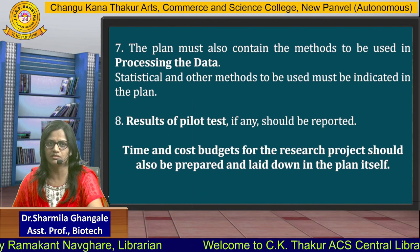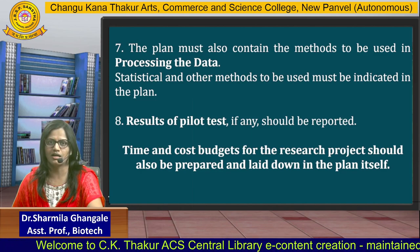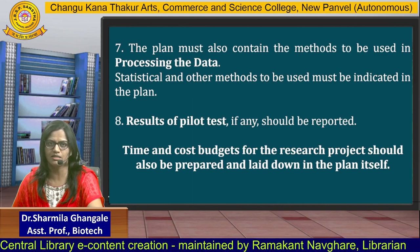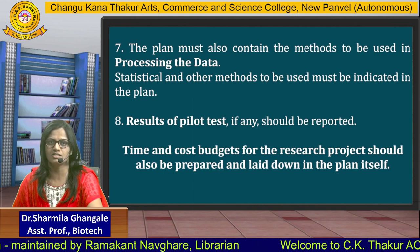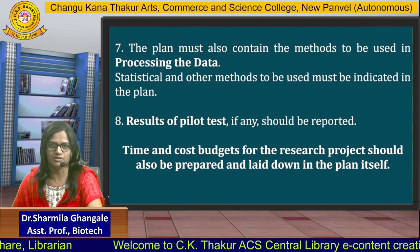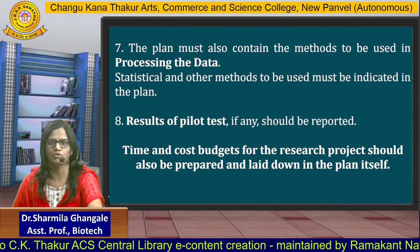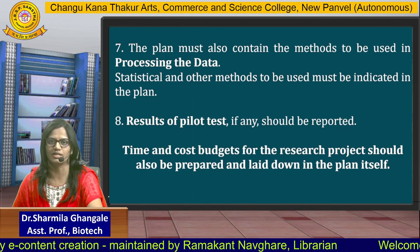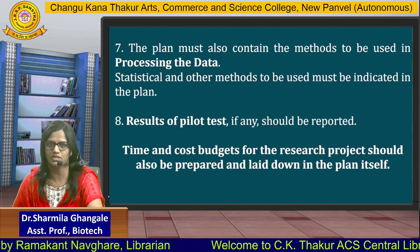The plan must also contain the methods which are going to be used for processing the data. Statistical and other methods to be used should be indicated in the plan, as that will give us the essence of your research work. Therefore, the methods used for processing the data should be incorporated in the research plan. Last but not least, the result of a pilot test. Sometimes many researchers go through preliminary survey methods or preliminary research work. The result of that pilot test — whether this research work is going to be successful in the future or not — could also be reported before starting the research work. Another important point: the time and cost budget of the research project should be prepared.